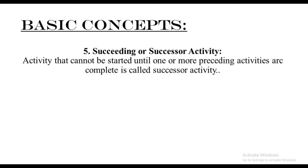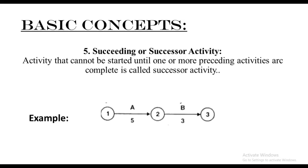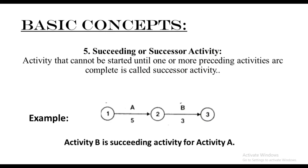The next basic concept is the succeeding activity. An activity that cannot be started until one or more preceding activities are completed is called a successor or succeeding activity. In the same diagram, activity B is the succeeding activity for activity A. So activity A is preceding for B, and activity B is succeeding for A — the one which is prior is called preceding, and the one which comes after is called the succeeding activity.